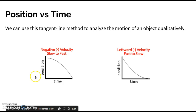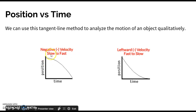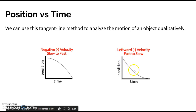On the left, we have a position versus time graph with a negative velocity. Thinking about tangent lines, the slope at the beginning is not very steep, so the object is moving slowly. As time goes on, the slope gets steeper — the object goes from a slower speed to a faster speed. On the right, the opposite happens: a steep slope at the start that becomes shallower, meaning the object goes from a fast speed to a slower speed over time.